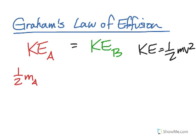So this will be one-half m of A times v of A squared equals one-half of the molar mass of gas B times the velocity squared. And that velocity is of gas B.